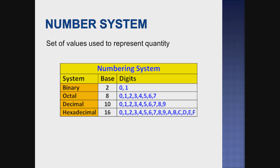Binary — from the name itself we can know that 'bi' means two. So we can use the digits zero and one. That is all.